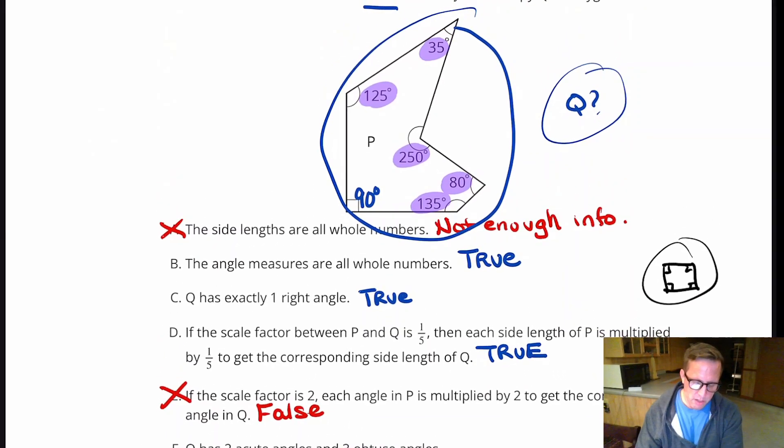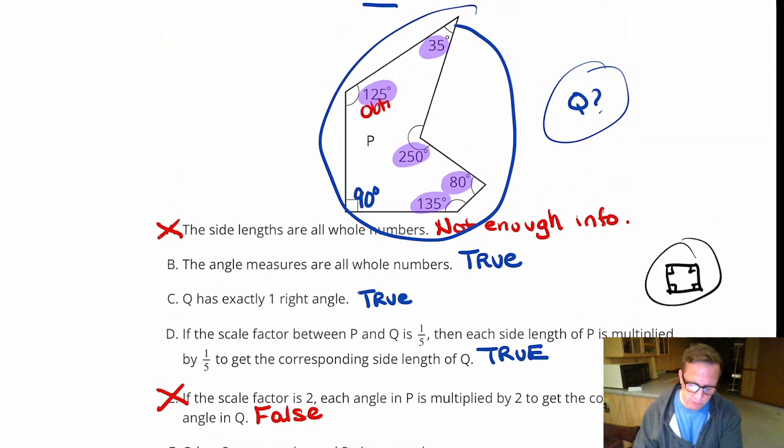Well, it looks like, right here, that's obtuse, because that's greater than 90. That's obtuse. That's a reflex angle. And that's obtuse, because that's over 90.